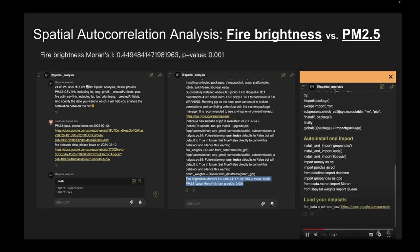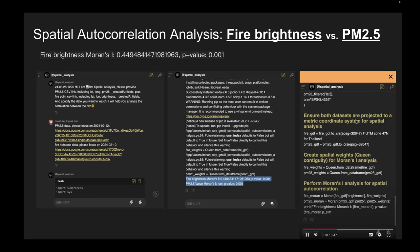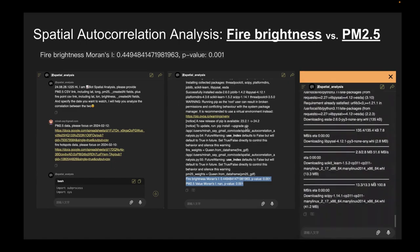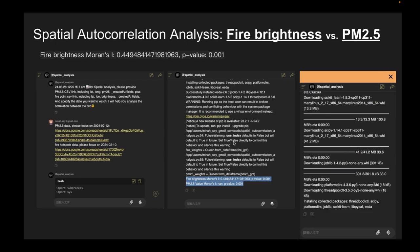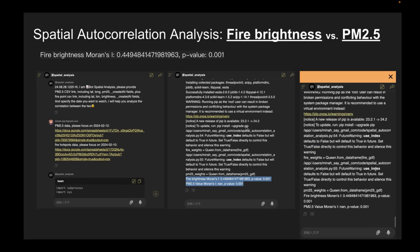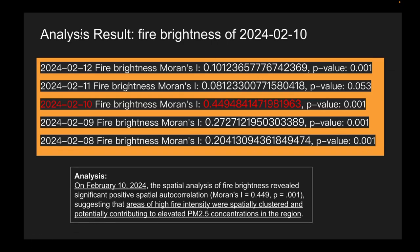This is the spatial analysis part. We provide the two data sources for the spatial analysis, and the AI will generate a geospatial statistical model to analyze whether these two datasets are correlated to each other. It generates the Moran's I indicator value. We applied this analysis across several days — we have a dataset from 2024, from February 10th to February 12th.